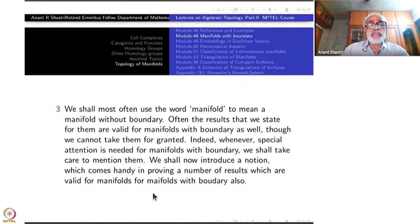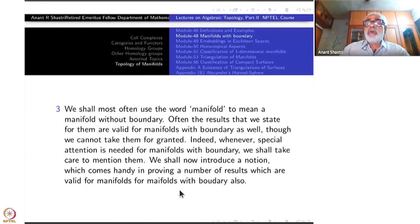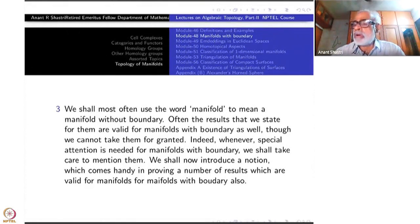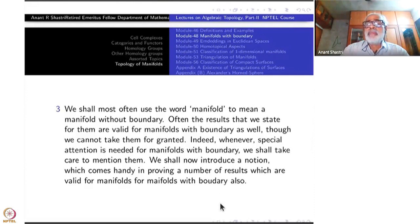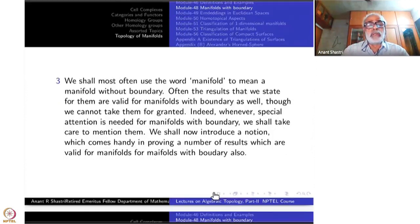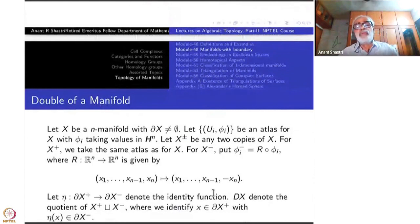We shall now introduce a notion which comes handy in proving a number of results valid for manifolds with boundary also. Once you prove some result for manifolds, it will automatically be proved for manifolds with boundary as well, without having to repeat everything. So that is the concept of the double of a manifold.